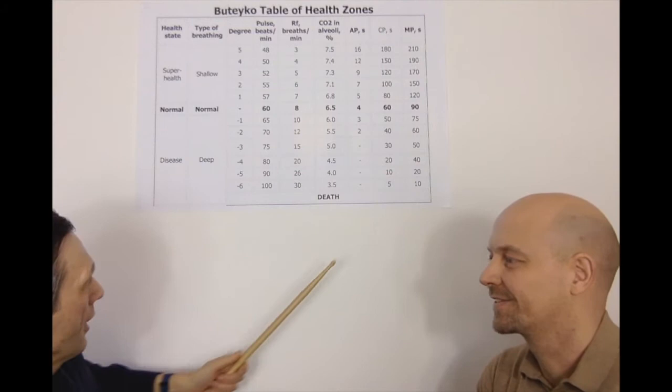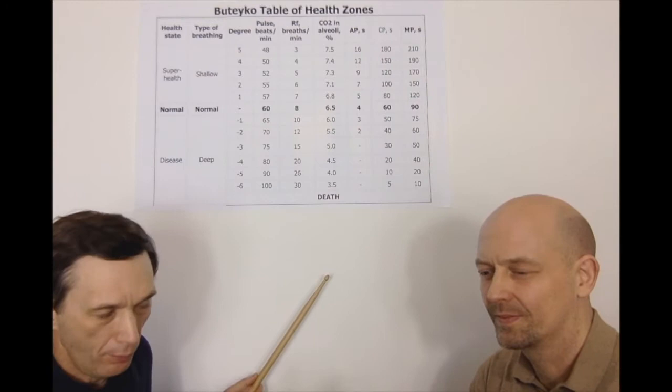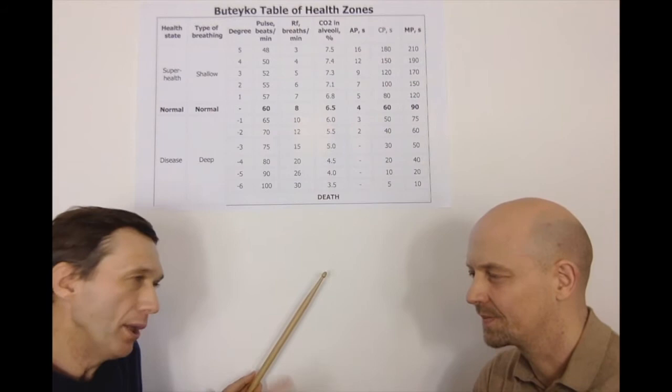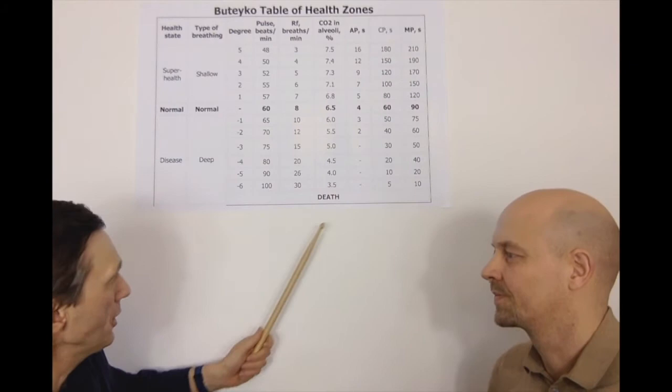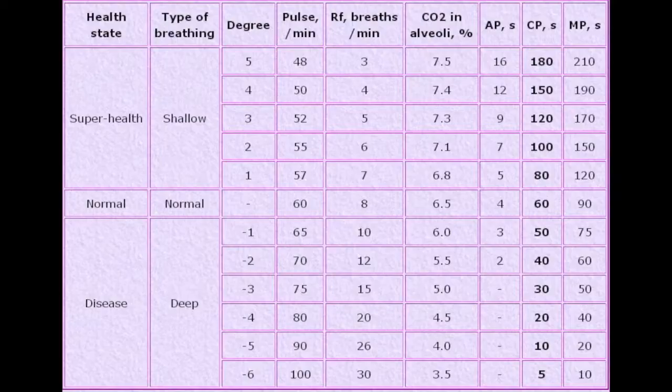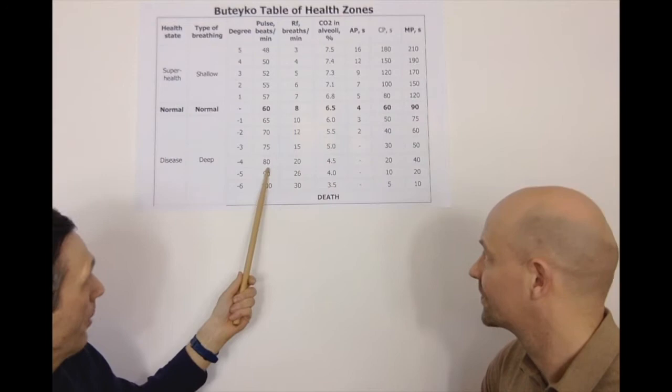The next stage is what we commonly see for people with later stages of cancer, complications of diabetes, or people who are severely sick and taking quite a lot of medication but may not be hospitalized. The body oxygen test would be about 10 seconds. There's no automatic pause, breathing frequency is very high — about 26 breaths per minute on average for large numbers of people — and heart rate is of course very high.